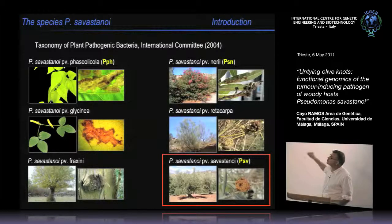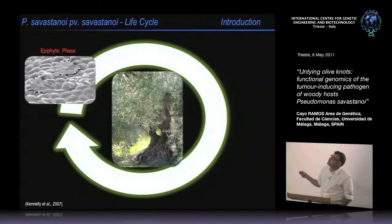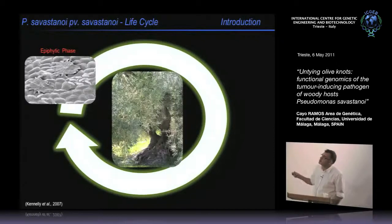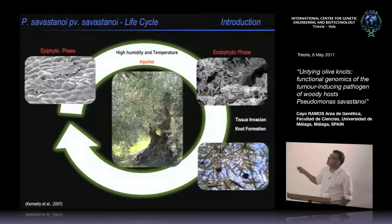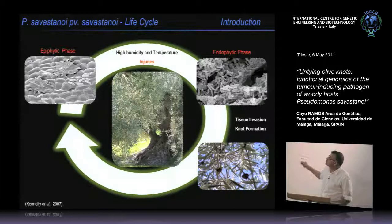These three pathovars produce tumors on their respective hosts. The life cycle of the bacteria involves living epiphytically on the leaves of the plant. During seasons when humidity is high and temperatures are not so high, the bacteria penetrate into the tissue through injuries and then live endophytically, producing tumors or knot formation.